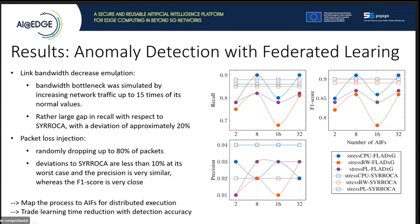To measure link bandwidth bottleneck, a throttle was simulated by increasing network traffic up to 15 times the normal value; here we saw a decrease of 20% compared to the centralized model. To simulate network failure, we performed packet loss injection and randomly dropped up to 80% of the packets — here the values remained close to the centralized model, with around 10% deviation in the worst case. So there is definitely a trade-off between centralized and federated learning.